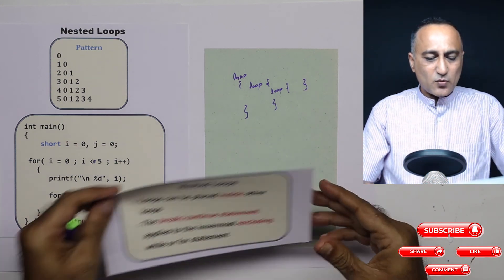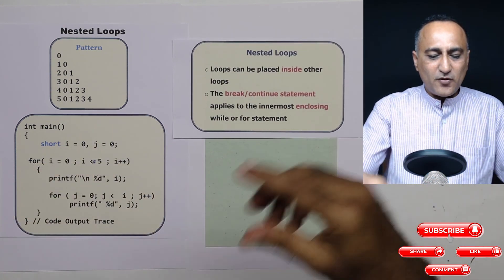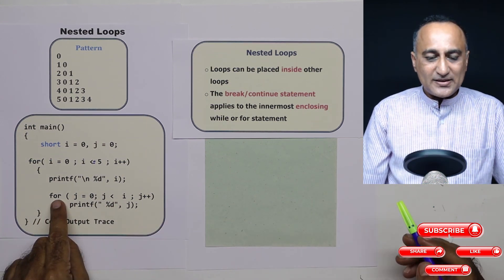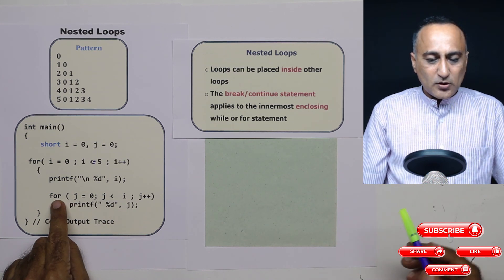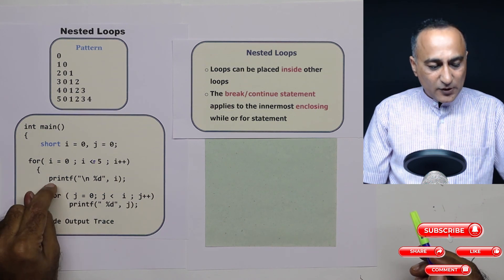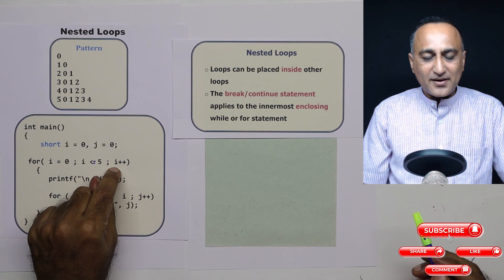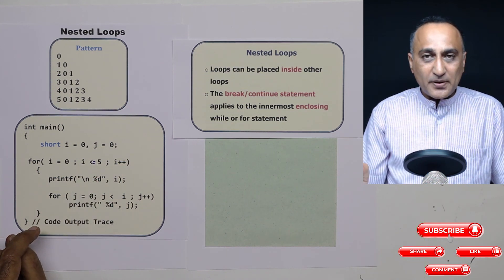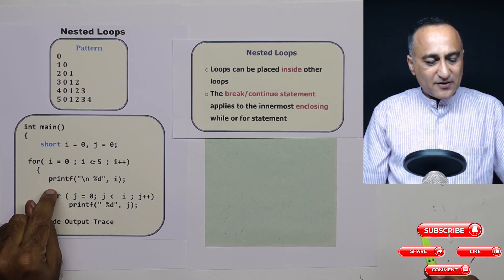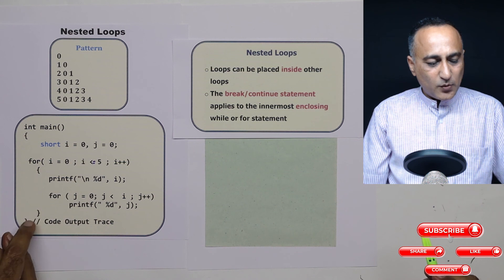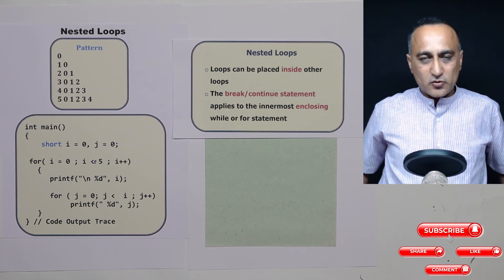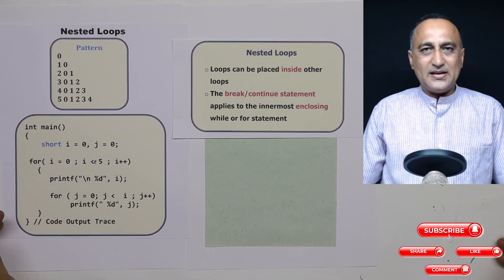So this should give you a neat idea of how to print a pattern and how a nested loop really works. A nested loop is nothing but a loop statement — whether it's a for, while, or do-while — within another loop. If I have a continue statement after the printf, it will not execute the inner for loop and will directly go back to the outer loop. The break or continue depends on where you place it. If I put the break statement after the printf, it will come out of the entire block and continue till the end of the program.